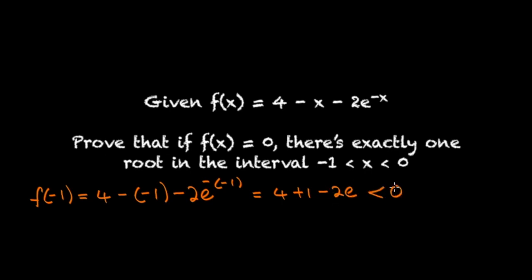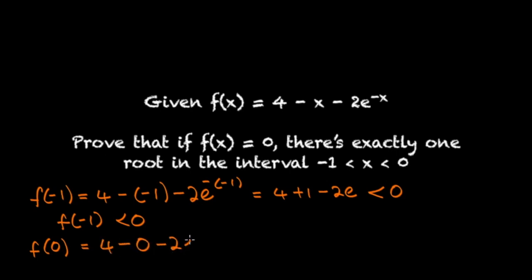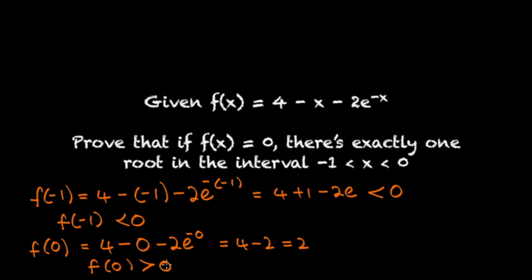So we have 5 minus 5.4, which is definitely negative, so f of minus 1 is less than 0. Now checking f of 0: f of 0 equals 4 minus 0 minus 2e to the power of 0. Since anything to the power of 0 is 1, we have 4 minus 2, which equals 2. So f of 0 is greater than 0. We've gone from negative to positive, so we do have a change in sign. Clearly there is no asymptote in the range minus 1 to 0, so we can deduce that there is an odd number of roots in that range.